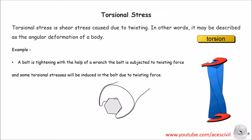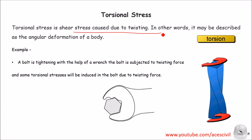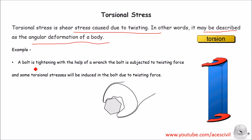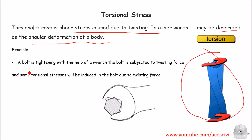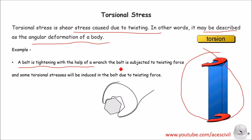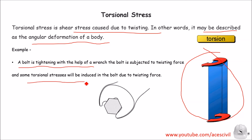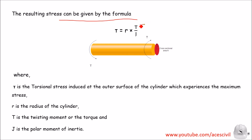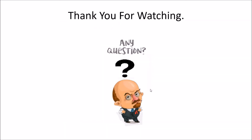Now we are going to discuss about torsional stress. Torsional stress is a shear stress caused due to twisting. In other words, it may be described as an angular deformation of a body, as you can see in the diagram. A practical example is twisting a bolt — when we twist the bolt, there is a twisting force, and this is the torsional stress in the bolt. The torsional stress can be calculated by the formula: tau equals R times T upon J, where tau is the torsional stress, R is the radius of the cylinder, T is the twisting moment, and J is the polar moment of inertia.